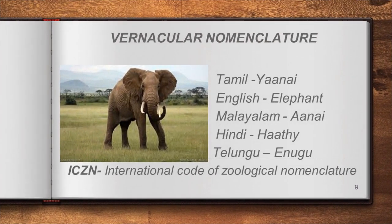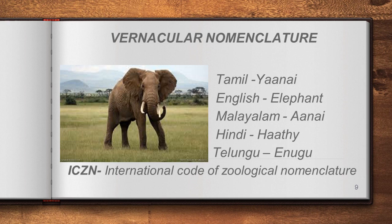Vernacular nomenclature means naming organisms with regional or local language. For example, the elephant is called 'Yaanai' in Tamil, 'Elephant' in English, 'Anai' in Malayalam, 'Hathi' in Hindi, and 'Enugu' in Telugu. The animal is the same, but we are calling it with different names. There are more than six thousand different languages in the world, so the same organism may get more than six thousand names.